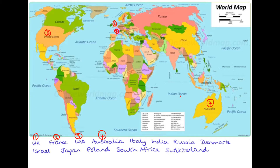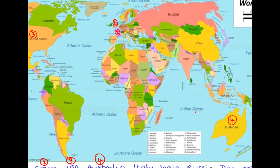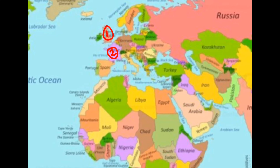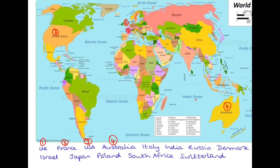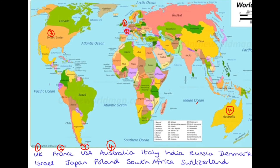Italy — can we spot Italy? It's the one that's a funny boot shape. Can you see? This is Italy, and we're going to call Italy five. Next, India — we need to head east from where we live in Europe. India is going to be number six, and it's there. Russia — big, big country, we can see it there in pink — that's going to be number seven. Remember: Italy is euros, India is rupees, and Russia is rubles.